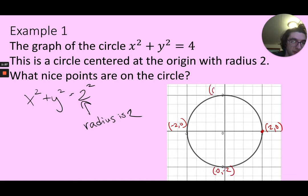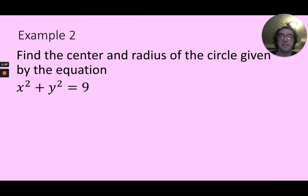negative 2, and 0, 2. So all of them are sort of 2 away from the center. It's not 4 away from the center. So we need to be a little bit careful when we're looking at stuff like this.